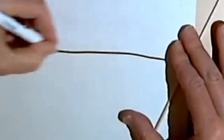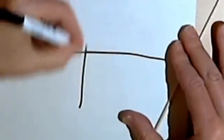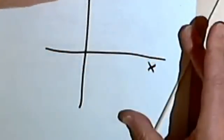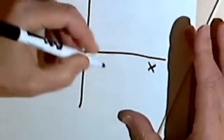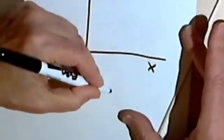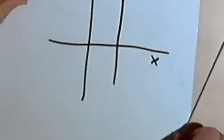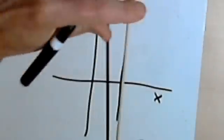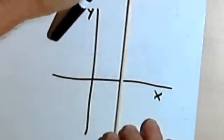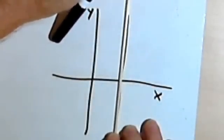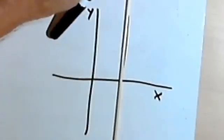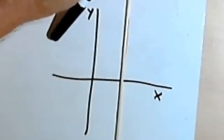One more: if I have a graph and it's a vertical line — a line straight up and down — that is absolutely not a function, because it fails the vertical line test everywhere.